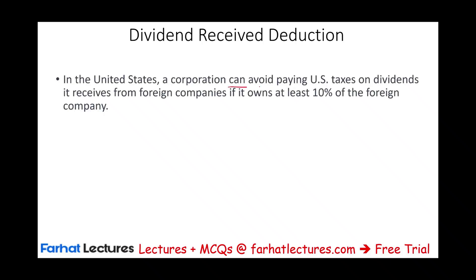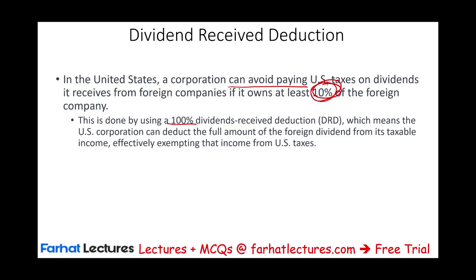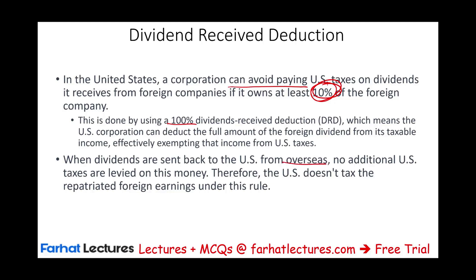A corporation can avoid paying U.S. taxes on dividends it received if it owns at least 10%. So the first rule is you have to own at least 10% of that foreign company to get a 100% dividend received deduction. It means you include that million dollars, then you will deduct it through the DRD. That million dollar is not counted. So when dividends are sent back to the U.S. from overseas, no additional U.S. taxes are levied on that income because it's a territorial system. You pay it in Australia, you bring it back, and we'll give you the DRD.